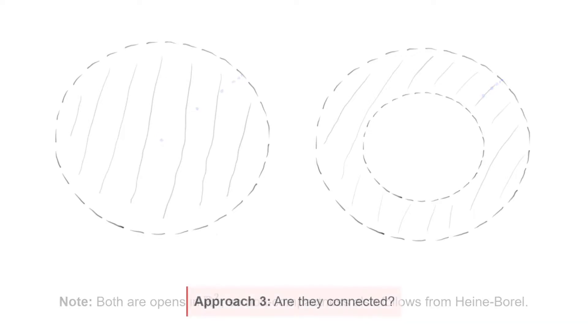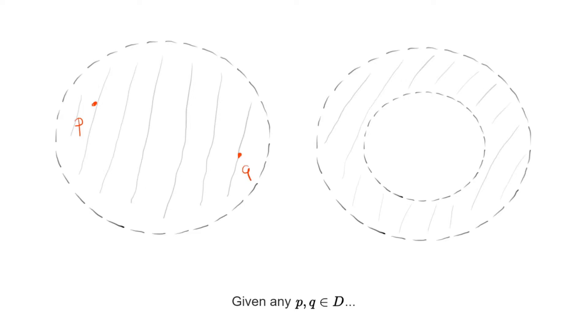Let's move on to connectedness. In this setting, it is easier to check path connectedness, which implies connectedness. Given two points P and Q in D, we can readily observe that the straight segment between them is contained in the disk as well.